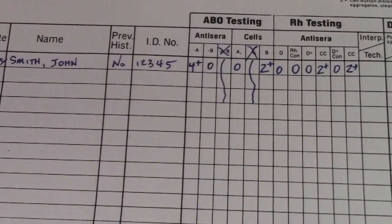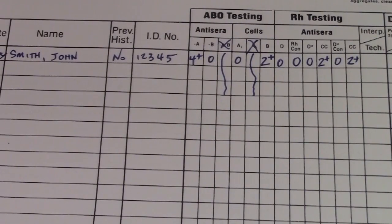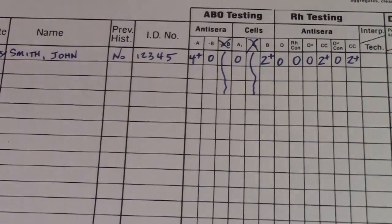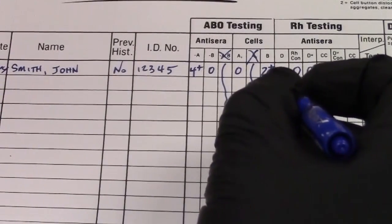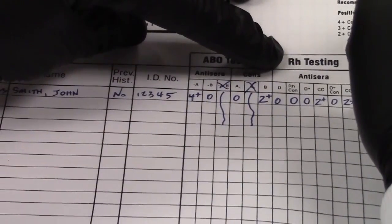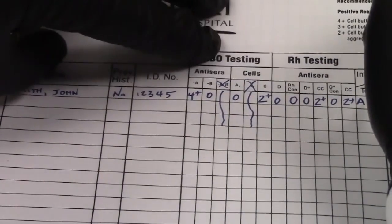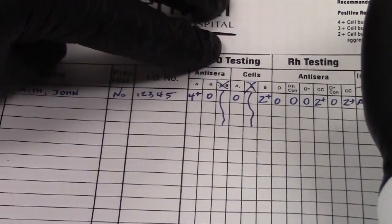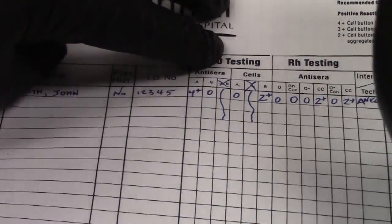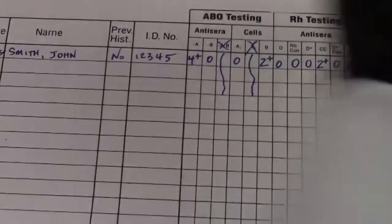All right, so all of our testing is checked out. Now what we need to do is interpret. So with the ABO, we look at our forward typing, and we have only the A. In our reverse typing, we should have the B cells. Now I know this is not the strongest reaction, but it's sufficient. So we're going to go ahead and call this patient A, and the RH testing all the way through weak D was negative. Now we are going to write neg. We don't just put two slash marks or an equal sign to indicate negative. We're going to write out neg. And the last thing is we're going to put our initials. Okay, finished. That was ABO RH with the weak D typing.